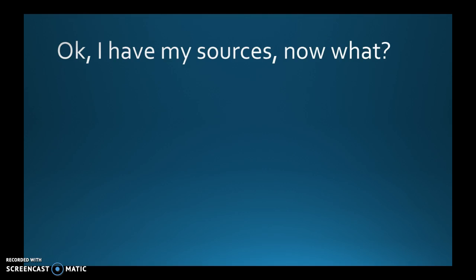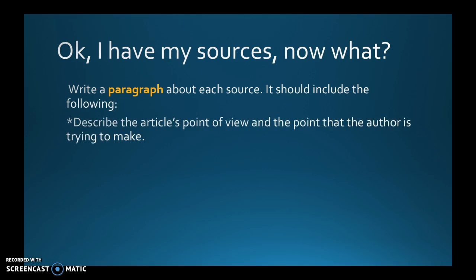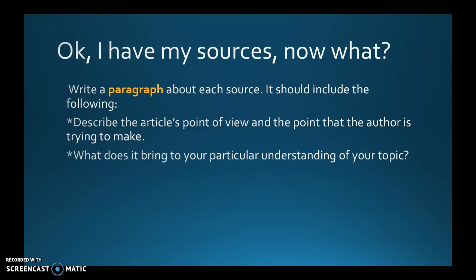Now you have your sources. You've found some good sources — now what? Well, the annotated bibliography takes it to another step. You should write a paragraph about each source. It should include: what is the article's point of view and what the author is trying to say about your topic; what does it bring to your particular understanding of the topic; what does it back up as far as your research; and what did it change as far as your running or working thesis?